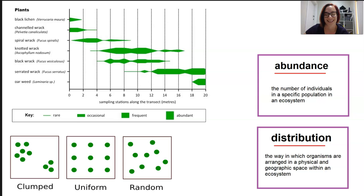So it's also important to consider the density of the population. Are they clumped, are they uniform, are they random?